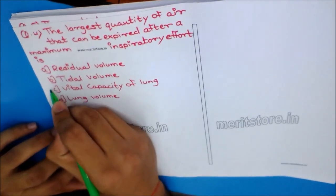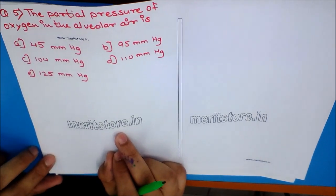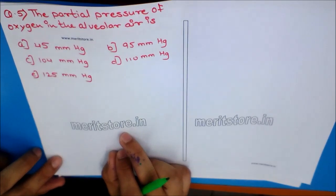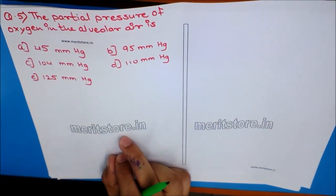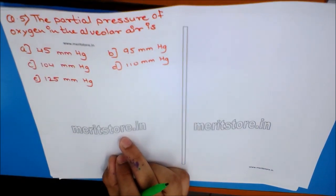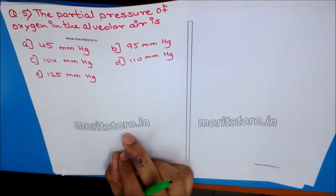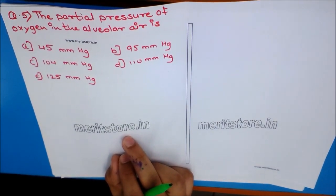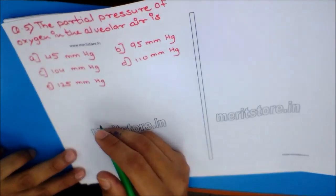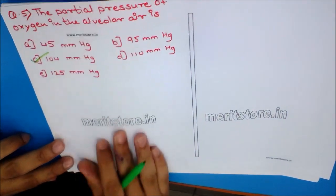Question 5: The partial pressure of oxygen in the alveolar air is? Options: A) 45 mmHg, B) 95 mmHg, C) 104 mmHg, D) 110 mmHg, E) 125 mmHg. The answer is quite straightforward — a value to be remembered: 104 mmHg.